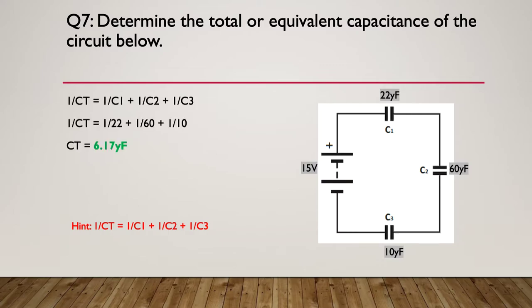So, again, doing the calc, it's simply going to be one on C2 is one on 22 plus one on 60 plus one on 10. You add the inverts together, invert them all back again. And the capacitance total in this particular case is 16.17 microfarads. Nice, simple and straightforward.